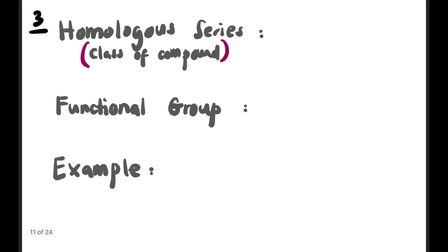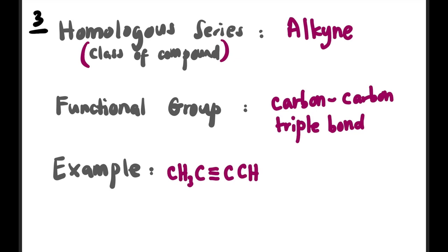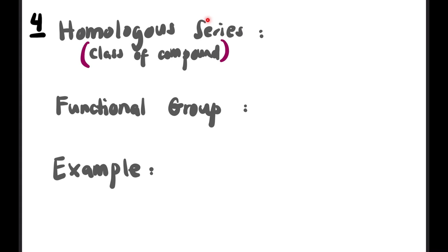The third homolog series is alkyne. If alkene had a carbon-carbon double bond, alkyne has a carbon-carbon triple bond (C≡C). An example structure shows a triple bond in the middle. In skeletal form, circle and label the C≡C triple bond as the functional group. The homolog series is called alkyne.